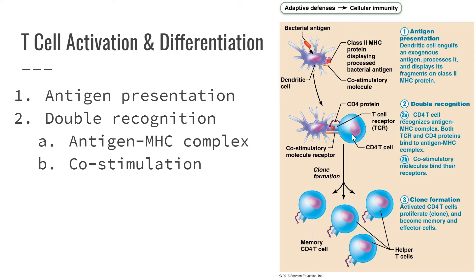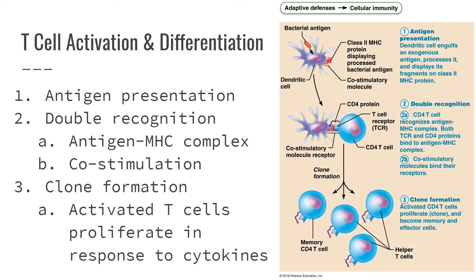The second step of double recognition is called co-stimulation. Another protein on the surface of the T cell has to bind with a protein on the surface of an antigen-presenting cell. If we don't have both steps, nothing will happen. If we do bind both the antigen-MHC complex and the co-stimulatory molecule, the T cell becomes activated and starts multiplying. Why is double recognition so important? Because T cells can actually kill other cells, so we really don't want to activate them by accident. If a T cell got activated by a class 1 MHC alone, it would literally start killing all of our body cells. The double recognition makes it much less likely to be activated by mistake.